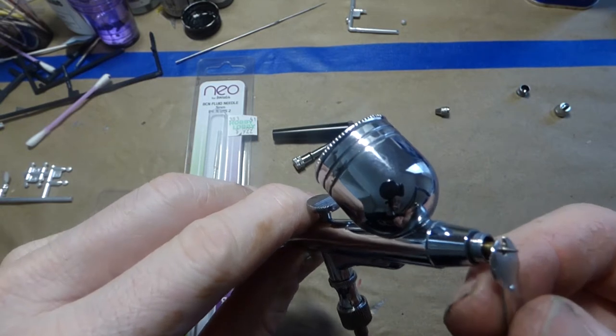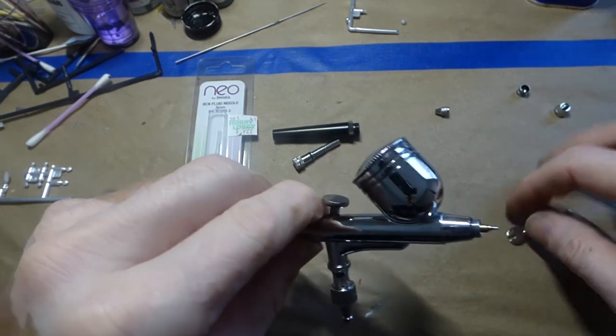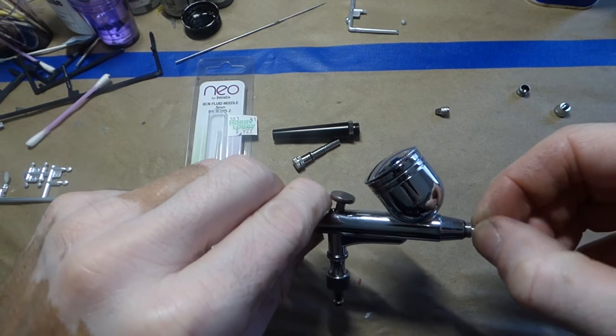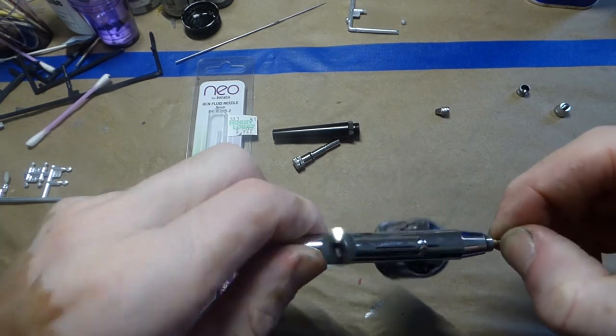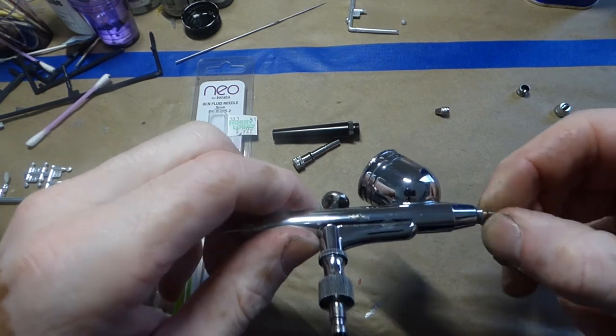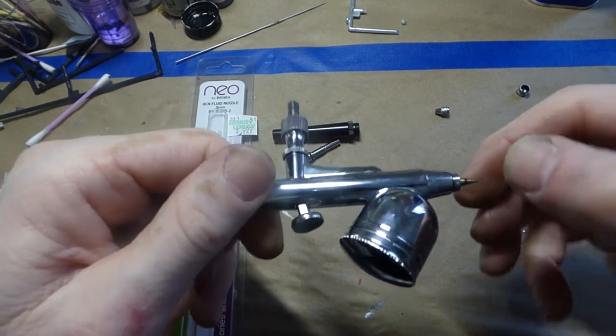Get the nozzle off. It's not on there very tight at all because you don't want to crush that seal it's got in there.